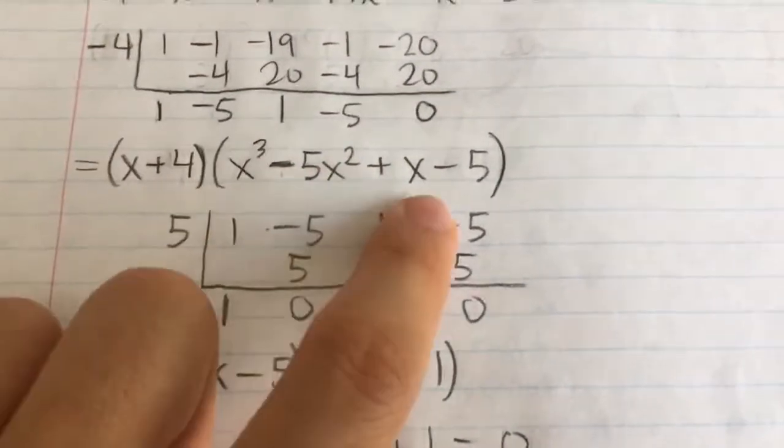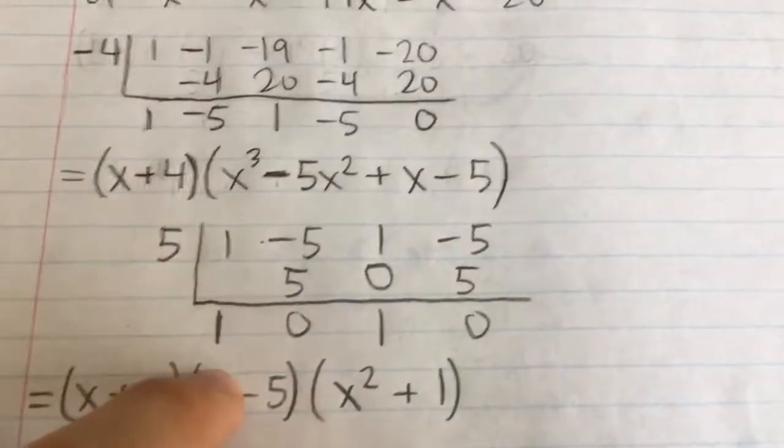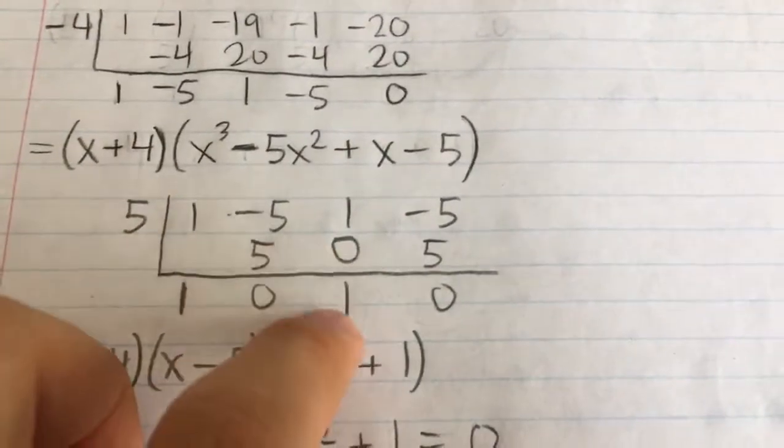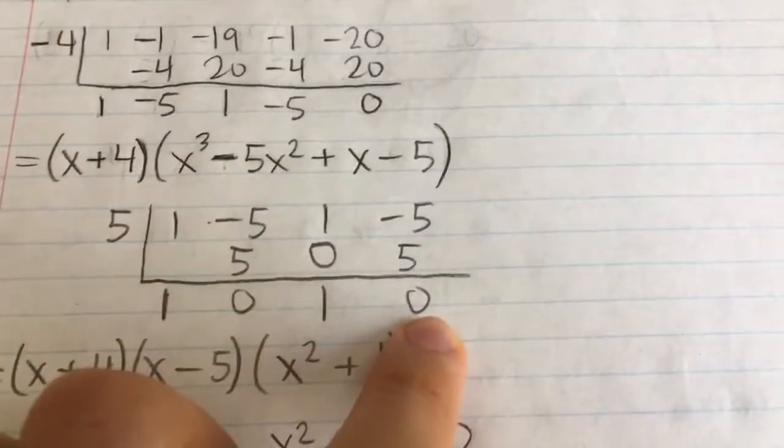So bring down the coefficients of the polynomial, put 5 over on the left, bring down the first number, multiply, add, multiply, add, etc. You'll get zero at the very end.